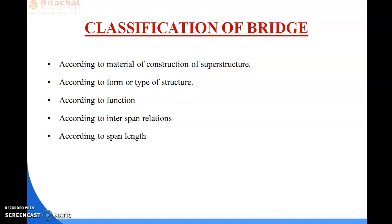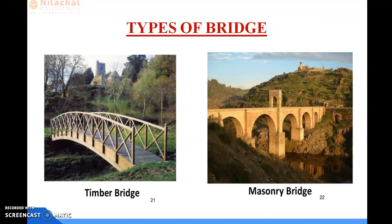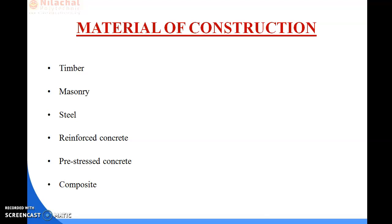The main structural element of the beam bridge is a horizontal beam supported at each end. It can be simply supported when the beam is connected across a single span, or continuous when the beam is constructed across two or more spans. The materials of construction include timber, masonry, steel, reinforced concrete, pre-stressed concrete, and composite materials.